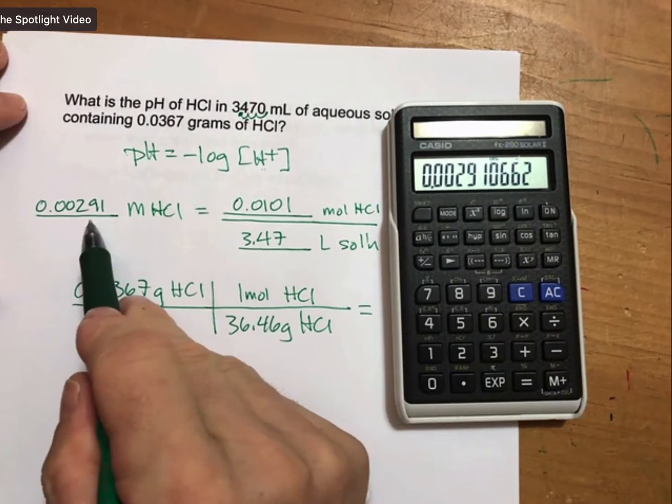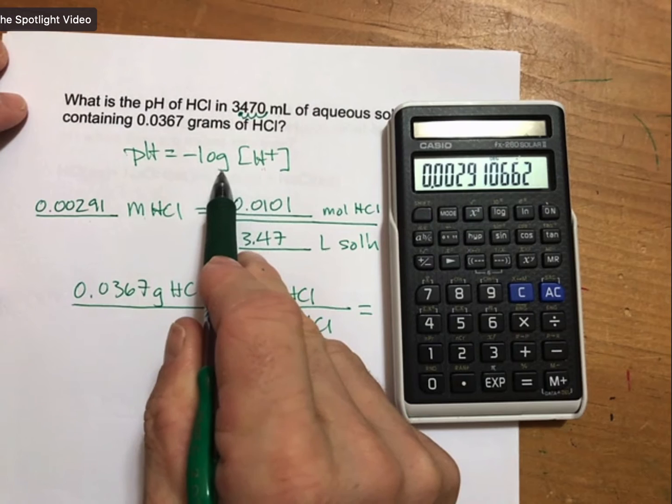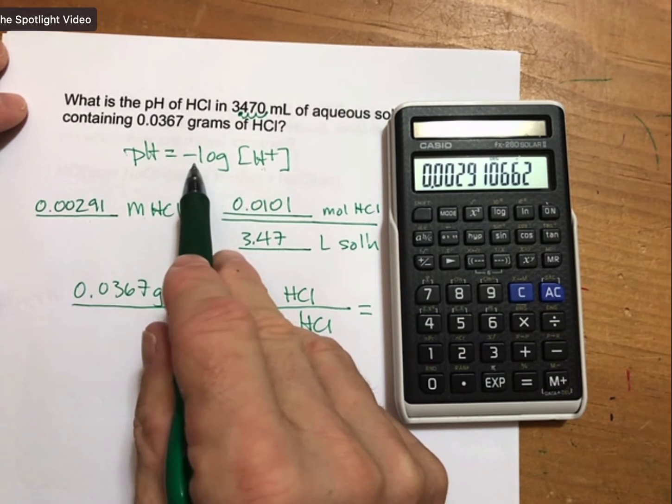And once I have my molarity of HCl, I can straightaway plug into my negative log.